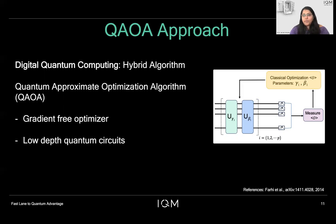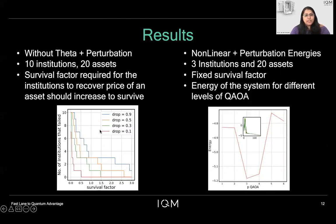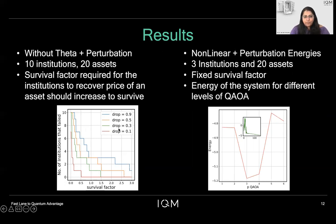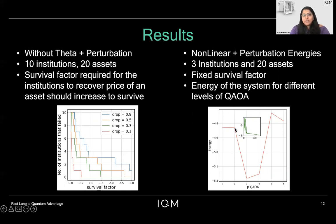Such a QAOA optimization leads to the following results. On the left hand side, I first show you without the nonlinear term for 10 institutions with 20 assets. I show how, with the survival factor, the number of institutions that failed is affected. I'm fixing the drop factor, and as you can see, if the drop factor is really high, then the institutions fail almost always — they are not able to survive such a drastic change. In fact, only one institution at a parameter value of 3 could at all survive and recover. On the right hand side, I show you the calculation with the nonlinear term into consideration.